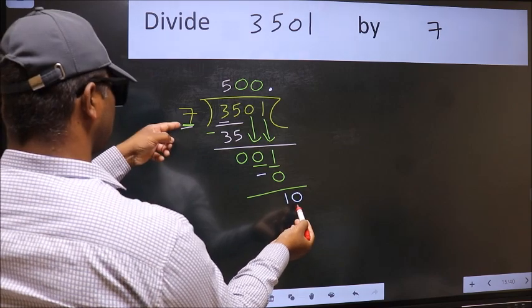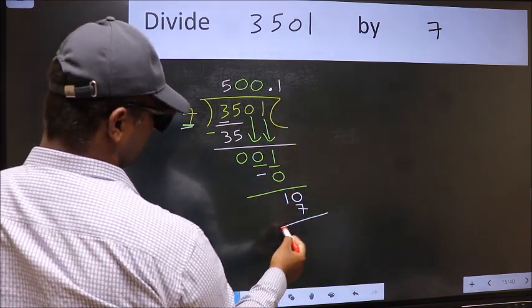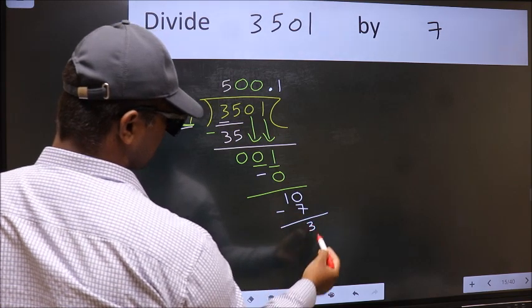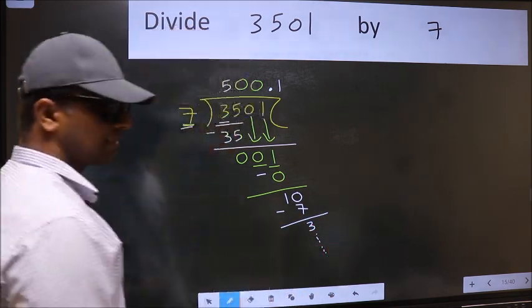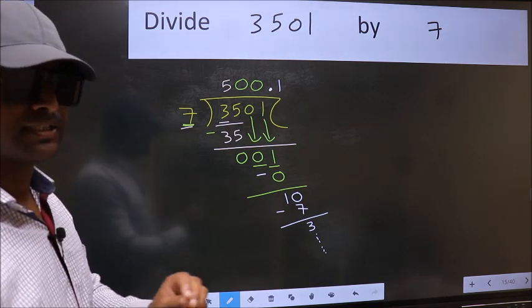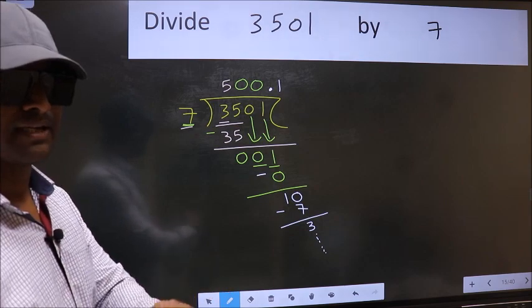A number close to 10 in the 7 table is 7 once 7. Now we should subtract. We get 3. And you continue the division. I am not doing that. Did you understand where the mistake happens? You should not make that mistake.